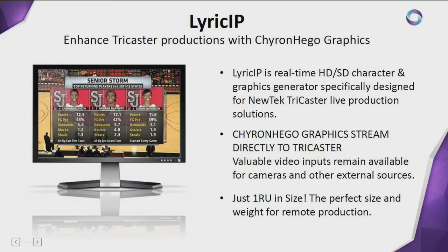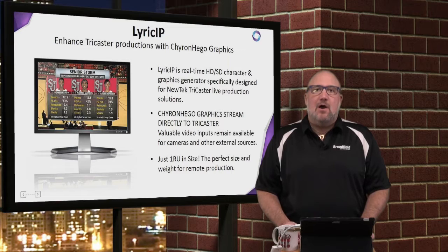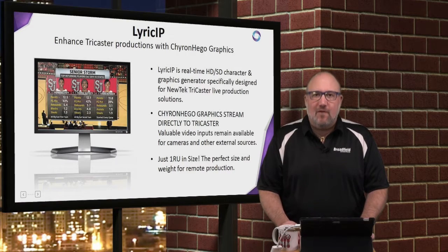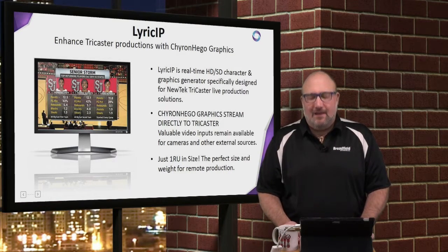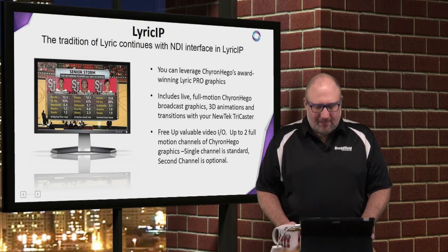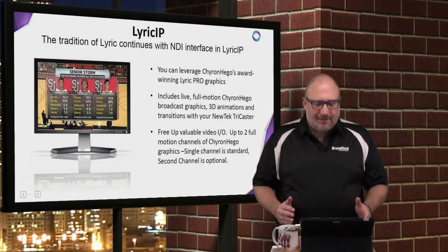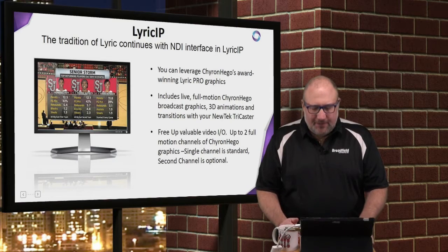With any TriCaster you're going to get Chiron Higo graphics live streaming to your TriCaster via IP, via NDI — it comes right in. It's a 1RU rack unit that you just mount right in your rack. Easy install, no other cables to hook up other than the network cable.